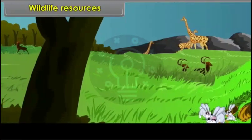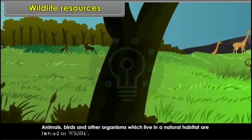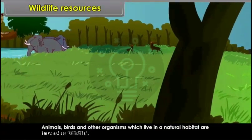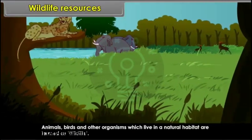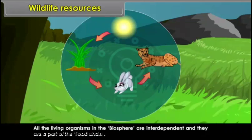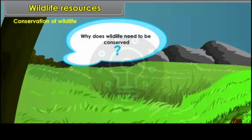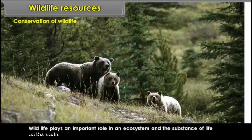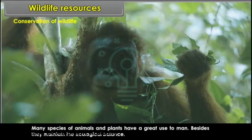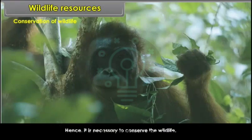Wildlife resources: Animals, birds and other organisms which live in a natural habitat are termed as wildlife. All living organisms in the biosphere are interdependent and are a part of the food chain. Wildlife plays an important role in an ecosystem and the sustenance of life on the earth. Many species of animals and plants have great use to man, and they also maintain the ecological balance. Hence it is necessary to conserve wildlife.